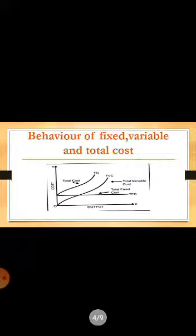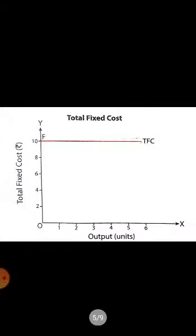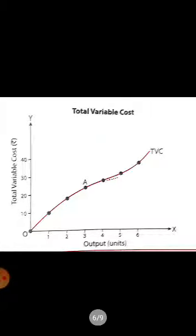Now we will discuss the behavior of fixed, variable and total cost. We have already studied total fixed cost that is fixed and parallel to x-axis. And the total variable cost increases with increase in output.